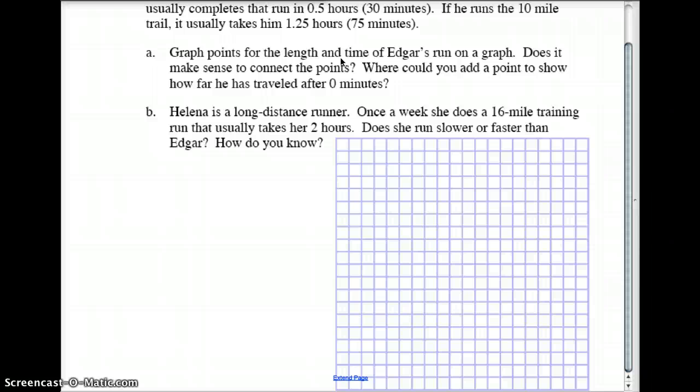If he doesn't run for any time at all, he's gone zero, so that would be parked here. Then connect all three points. Do those three points make a perfectly straight line?